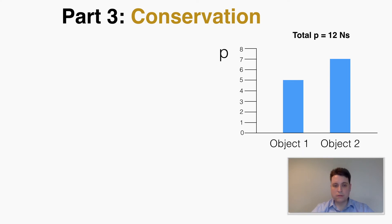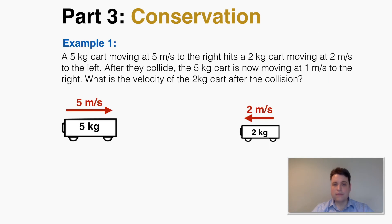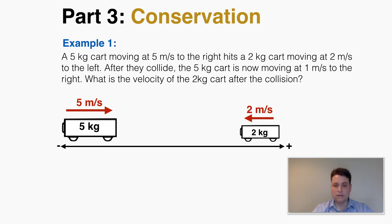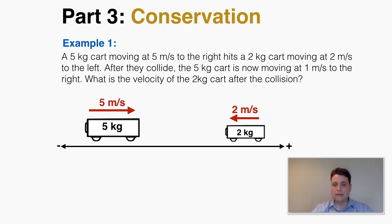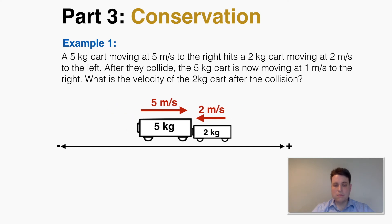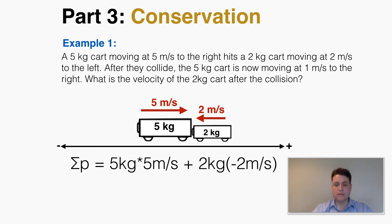Here's an example with actual numbers. A 5 kg cart moving at 5 m/s to the right hits a 2 kg cart moving at 2 m/s to the left. After the collision, the 5 kg cart is moving at 1 m/s to the right. What is the new velocity of the 2 kg cart? Defining right as positive and left as negative, the total momentum is (5 × 5) + (2 × −2) = 25 − 4 = 21 Newton-seconds.